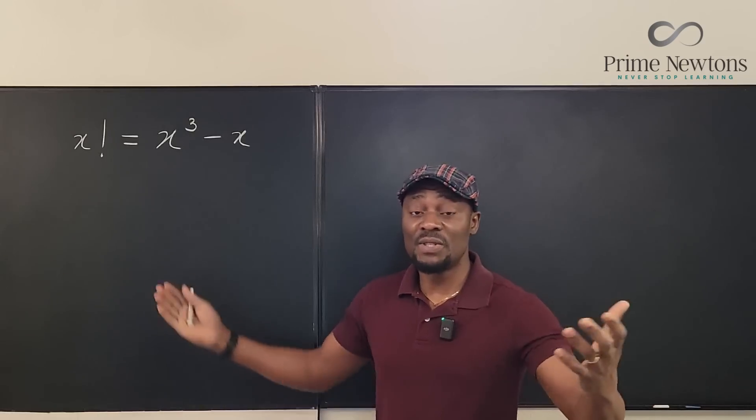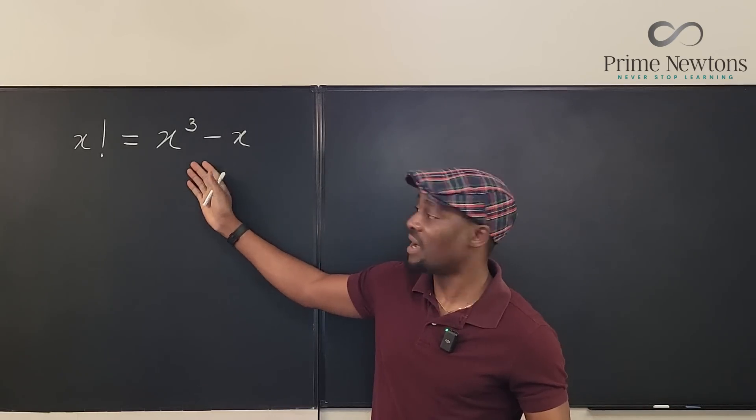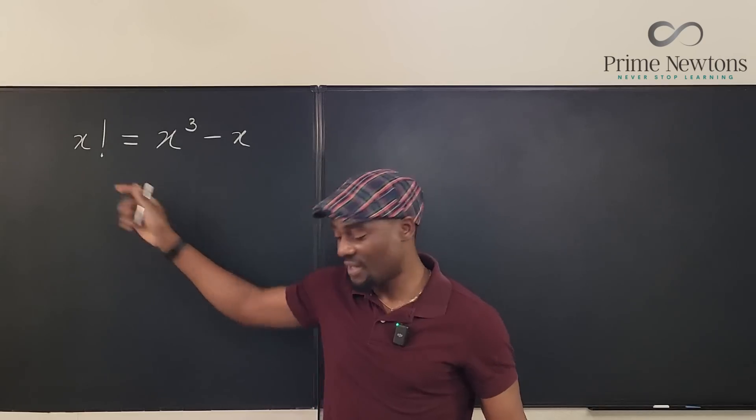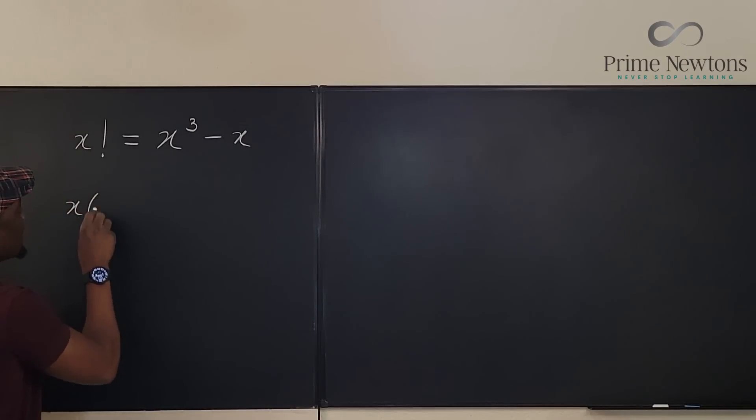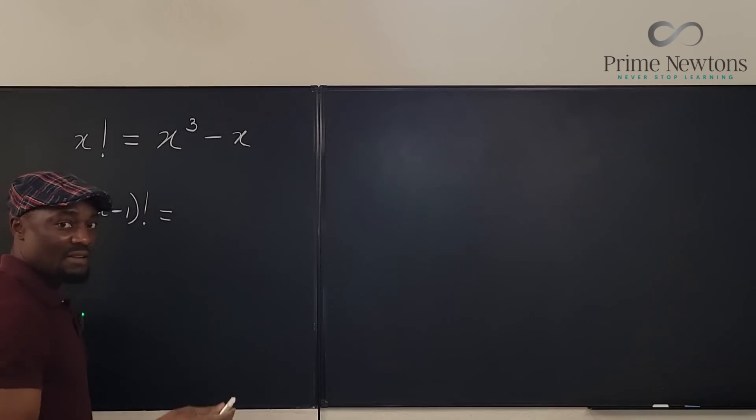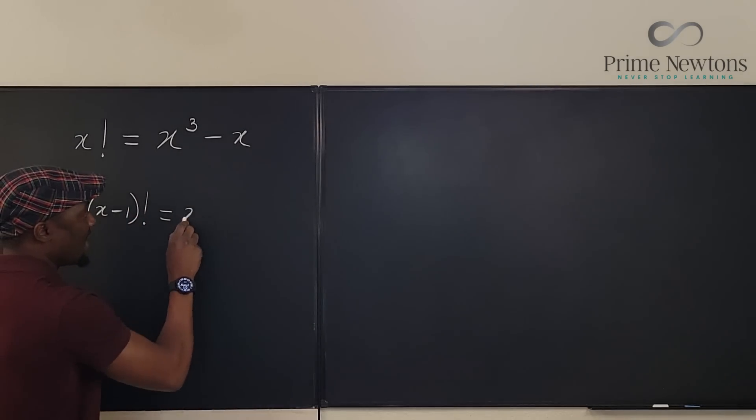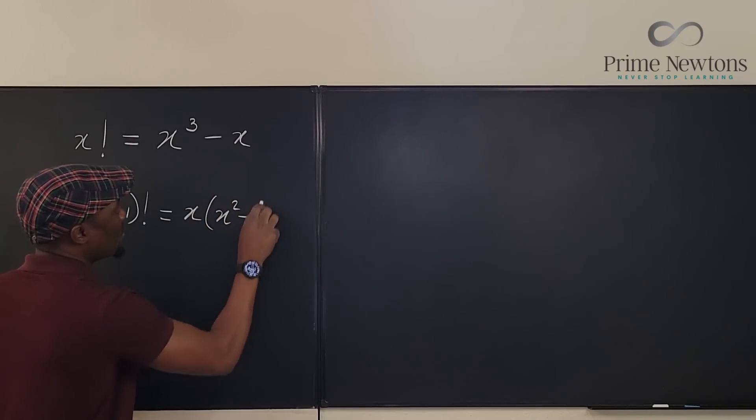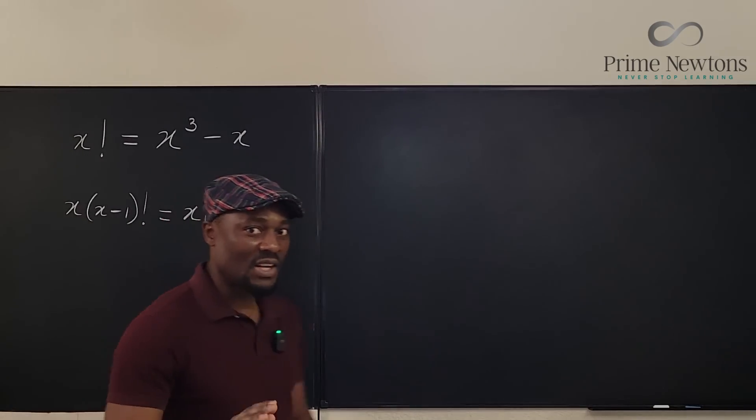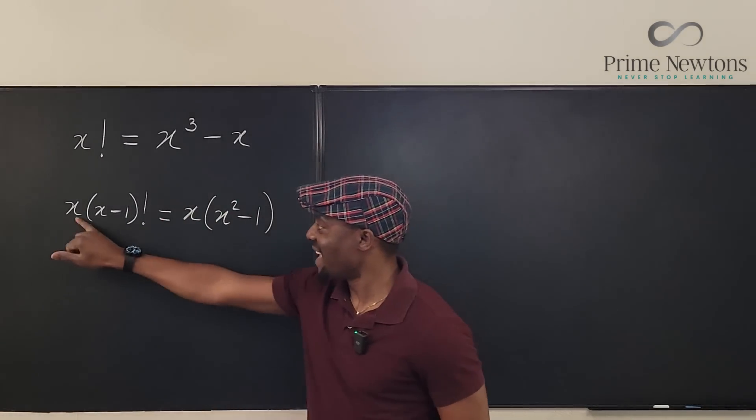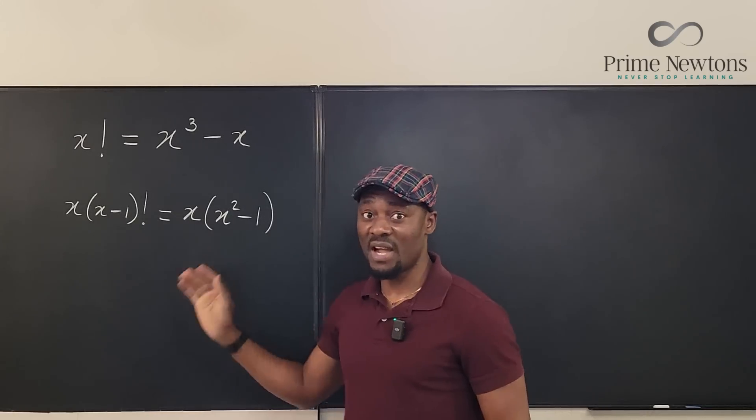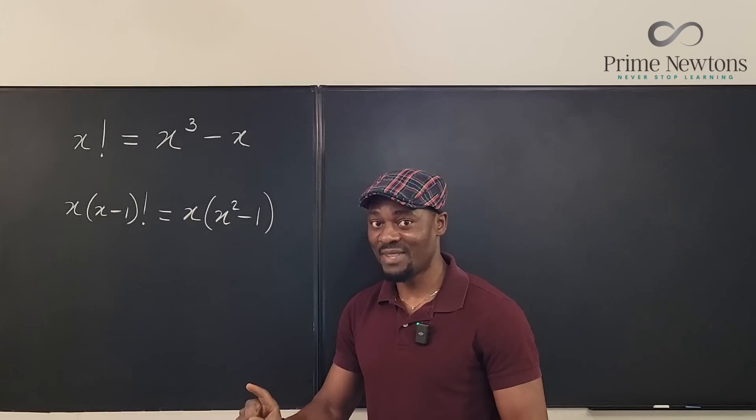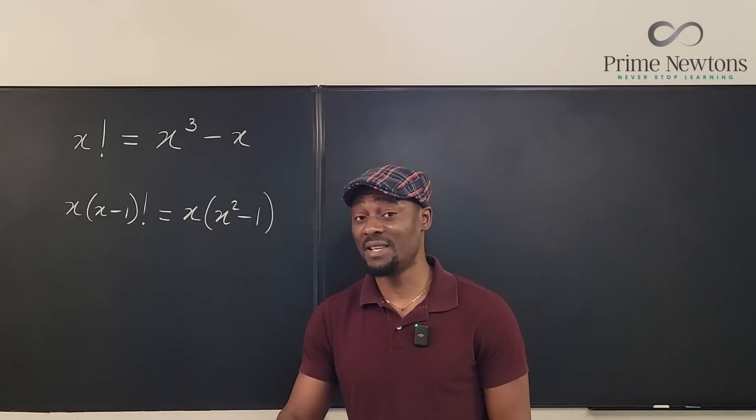So the first thing is use the definition for both sides, factor the right hand side, write the definition for this side. So what I'm going to do is say that x factorial can be written as x times (x-1) factorial. And on the right hand side, I can factor out an x. So I say that x times (x²-1). So I can clearly see that there is an x here. There's also an x here. So I can divide both sides by x on one condition if I know that x is not equal to zero.